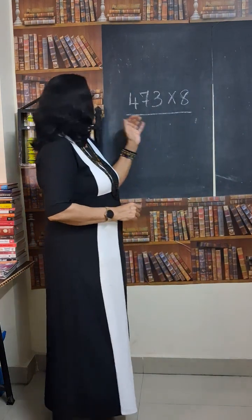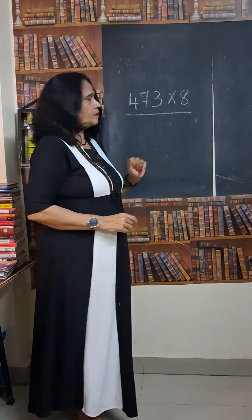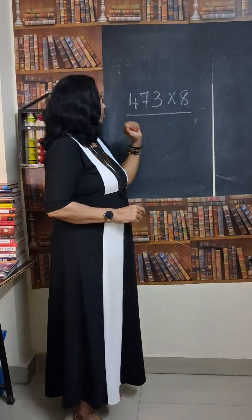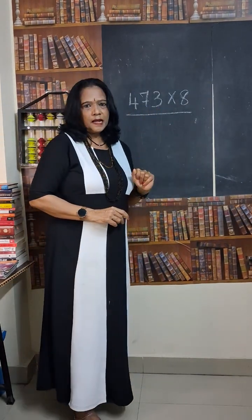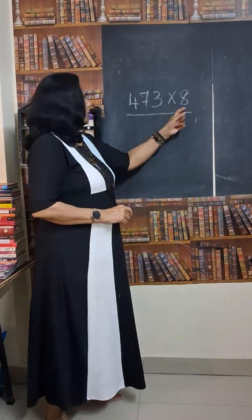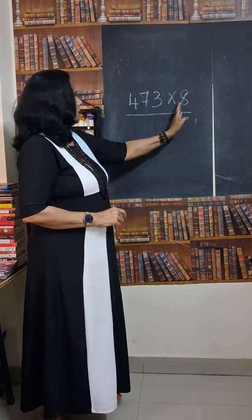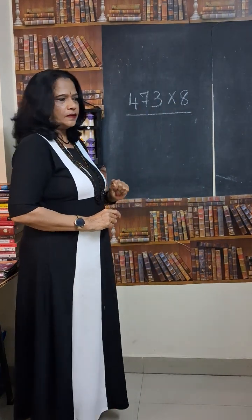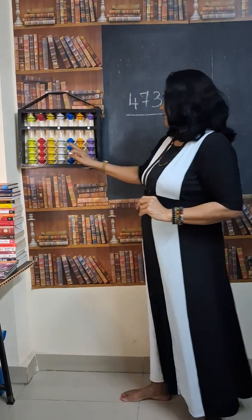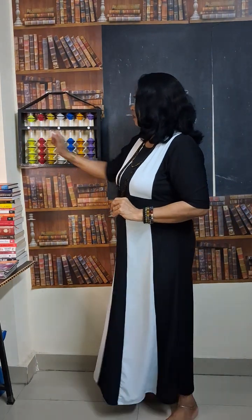Let us see how to multiply this. The number is 473 multiplied by 8. So 3 digits and 1 digit — totally 4 digits are there. If there are 4 digits in the question, it starts from house number 4.